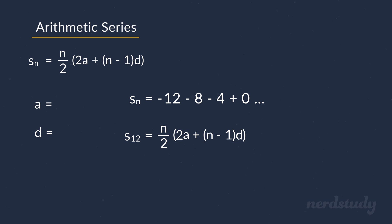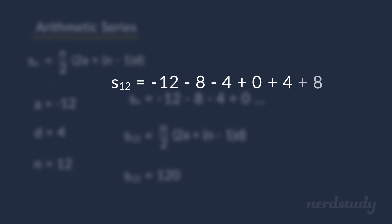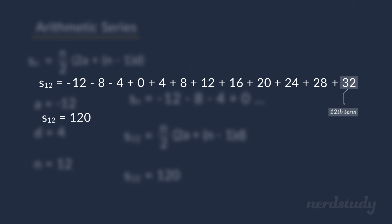So, our first term here is negative 12 and the difference is 4. Now, all we need to do is plug in our respective values including 12 as our n value which is already given to us. So, simplifying this gives us 6 times negative 24 plus 44. This equals to 6 times 20 which gives us a final answer of 120. Therefore, the sum of all the terms in this series up to the 12th term would be 120.